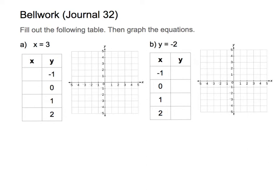Let's start with filling out this table. This is x equals 3 as our equation, and there's not much going on here — x just equals 3. I did fill out some y values, but naturally we would plug in y and find x. Since there are no y's in this equation, and x is always 3, I'm going to fill every slot here as 3.